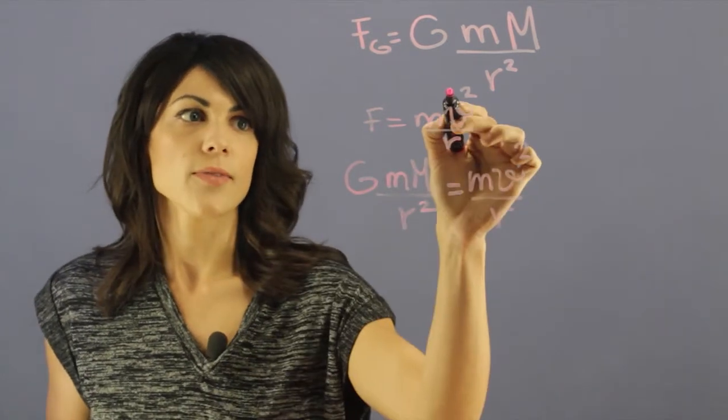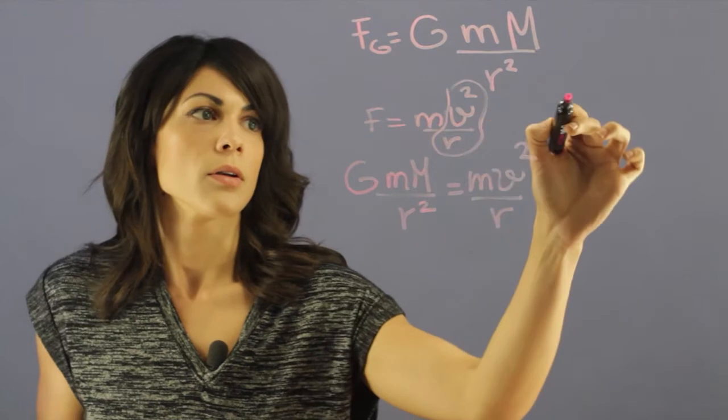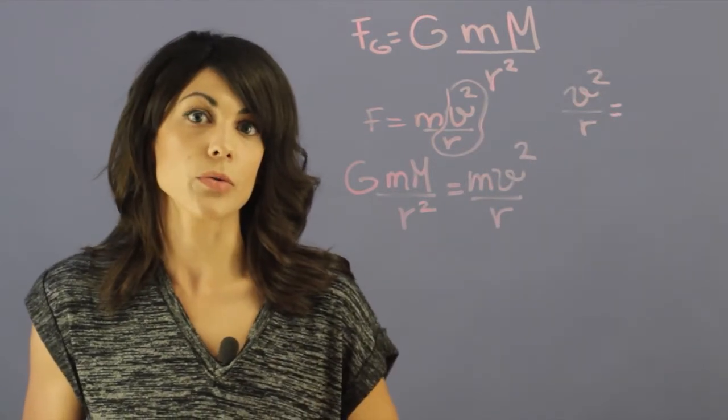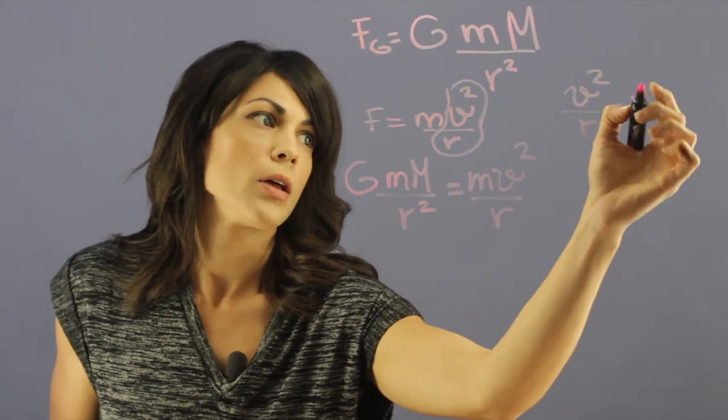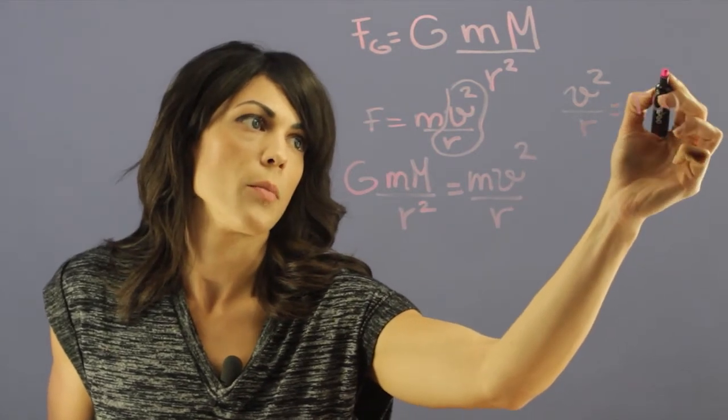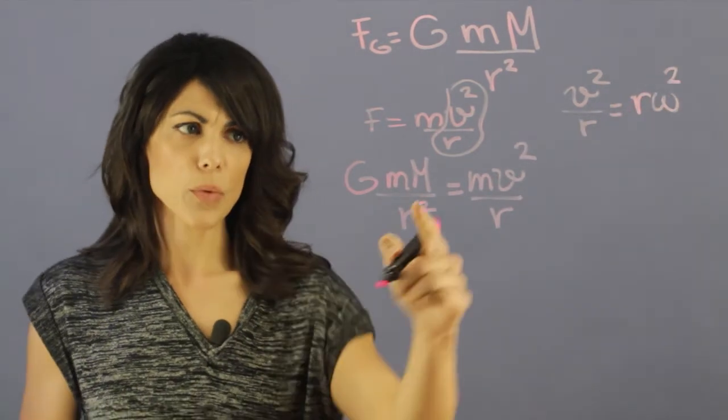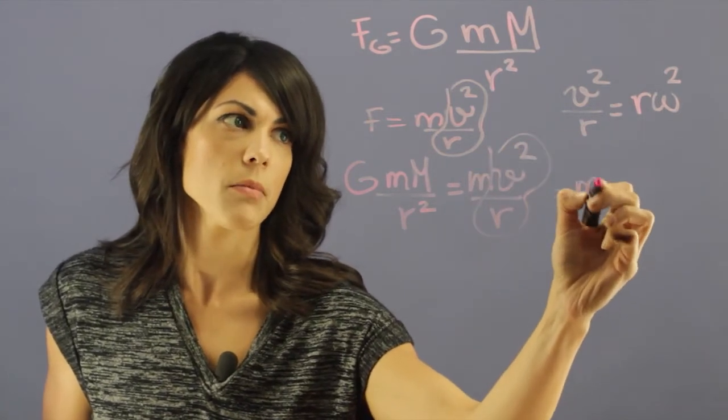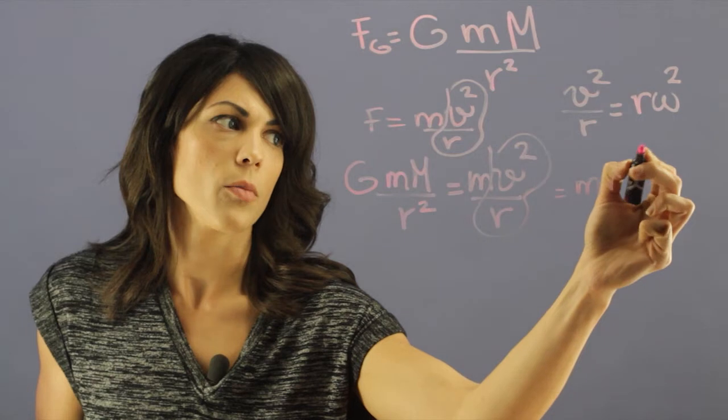We also know that this factor v squared over r, we can use the rotational period and have r omega squared. So we can actually turn this part of the equation equal to m r omega squared.